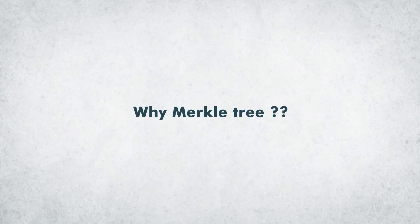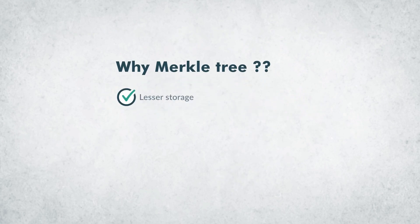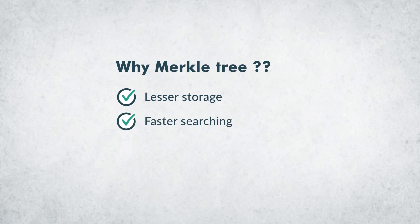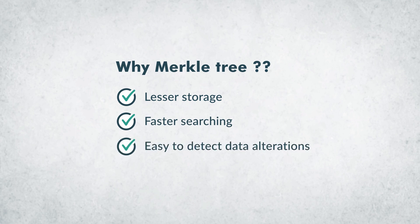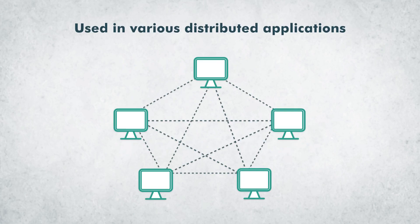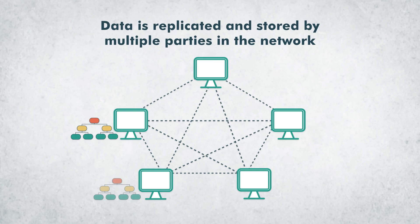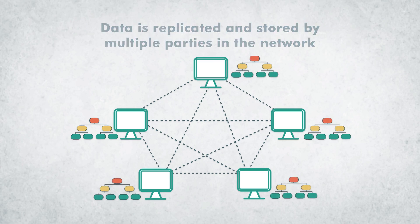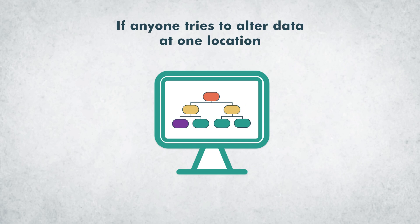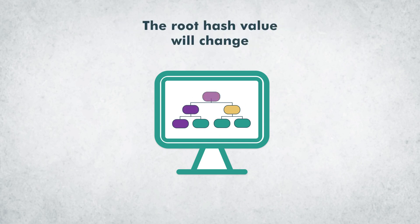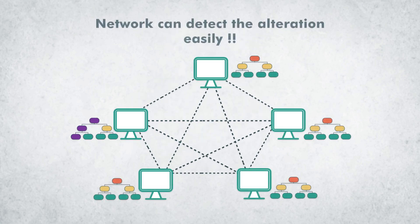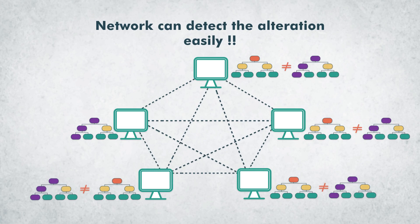Now the question is, why do we use the Merkle tree? First, Merkle trees store hash values of data that require less storage space. Second, search operations are faster. Third, hashing helps to track changes easily. Merkle trees are used in various distributed applications where data is replicated and stored by multiple parties in the network. If anyone tries to alter data at one location, the root hash value will change. Thus, others in the network can detect this alteration easily.